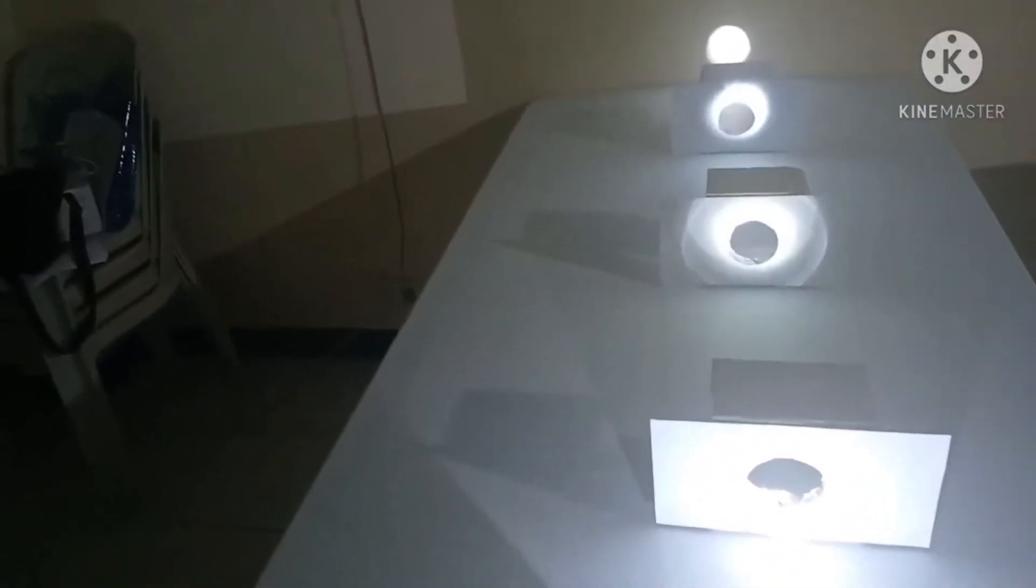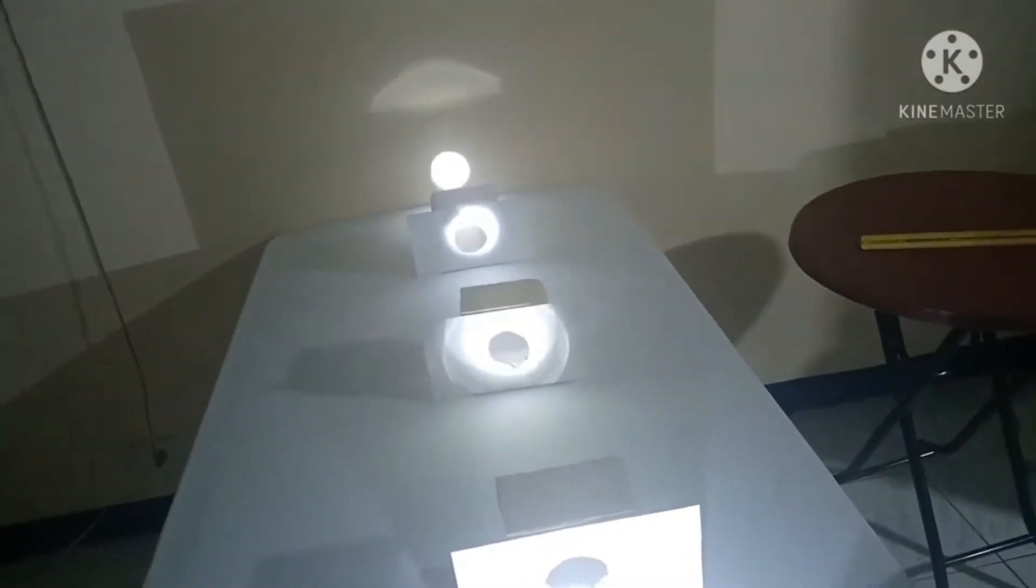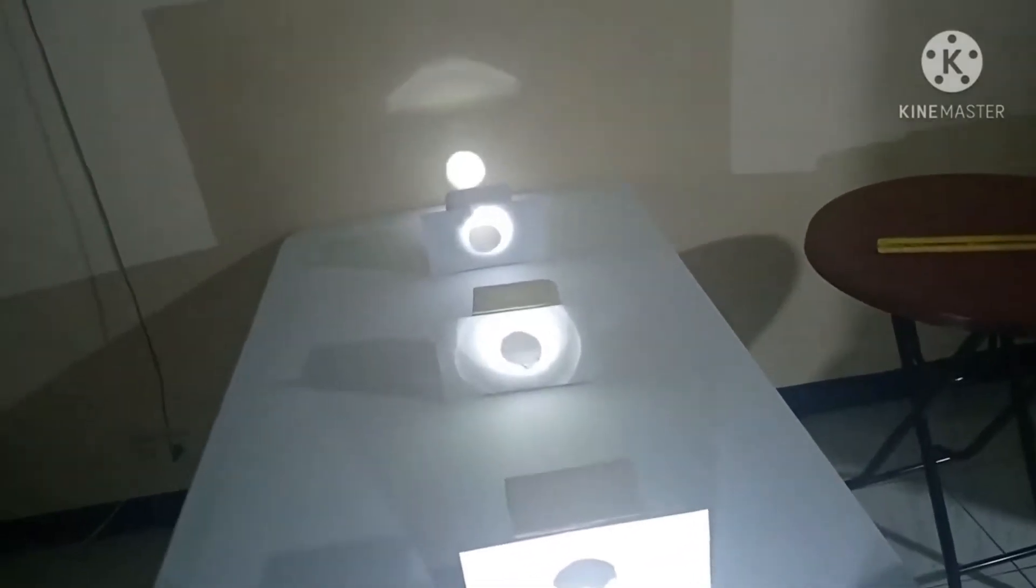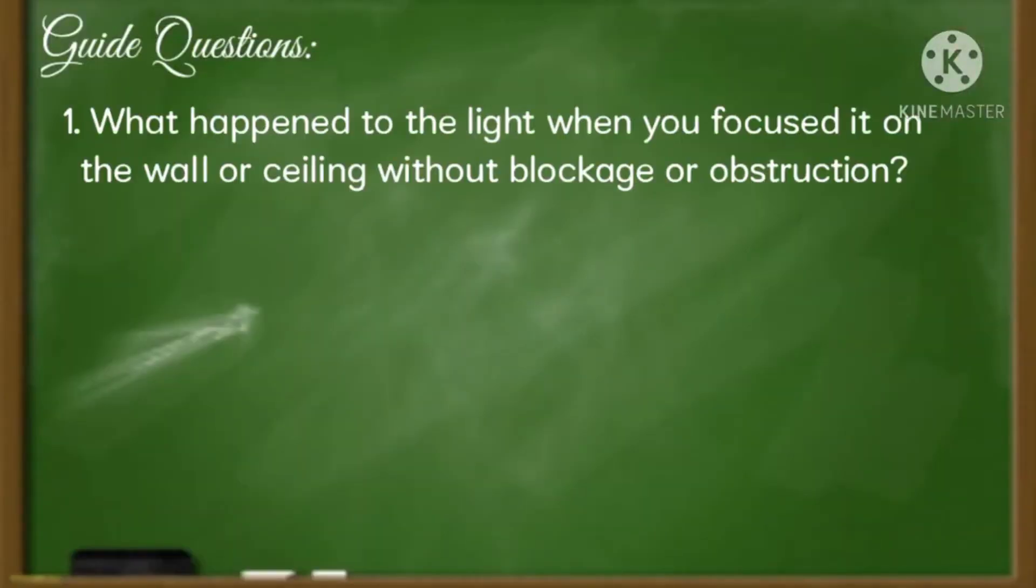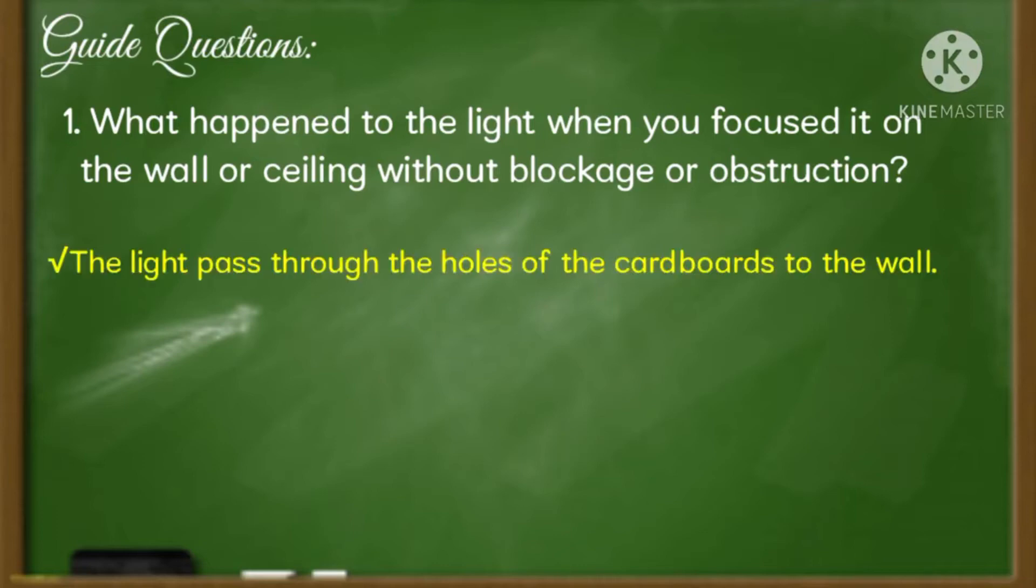Now, let your partner misalign the middle cardboard with holes and observe. To further understand the activity, let us try to answer the guide questions. What happened to the light when you focused it on the wall without blockades or obstruction? Yes, the light passed through the holes of the cardboard to the wall.